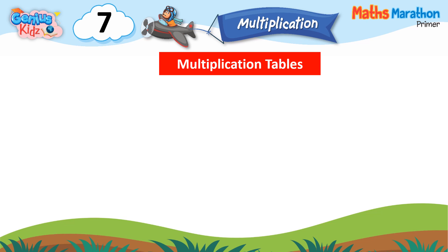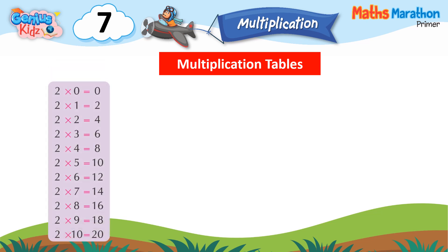Multiplication Table. 2 into 0 is equal to 0. 2 into 1 is equal to 2. 2 into 2 is equal to 4. 2 into 3 is equal to 6. 2 into 4 is equal to 8. 2 into 5 is equal to 10. 2 into 6 is equal to 12. 2 into 7 is equal to 14. 2 into 8 is equal to 16. 2 into 9 is equal to 18. 2 into 10 is equal to 20.